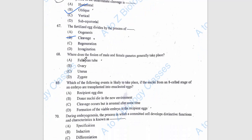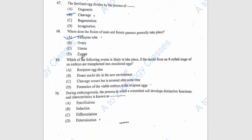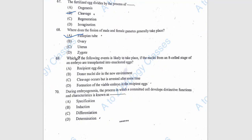Question 68: Where does the fusion of male and female gametes generally take place? It takes place in the ampullary region of the fallopian tube, option A. Question 69: Which of the following events is likely to take place if the nuclei from an 8-cell stage embryo are transplanted into an enucleated egg? The answer will be D, formation of a viable embryo in the recipient egg.